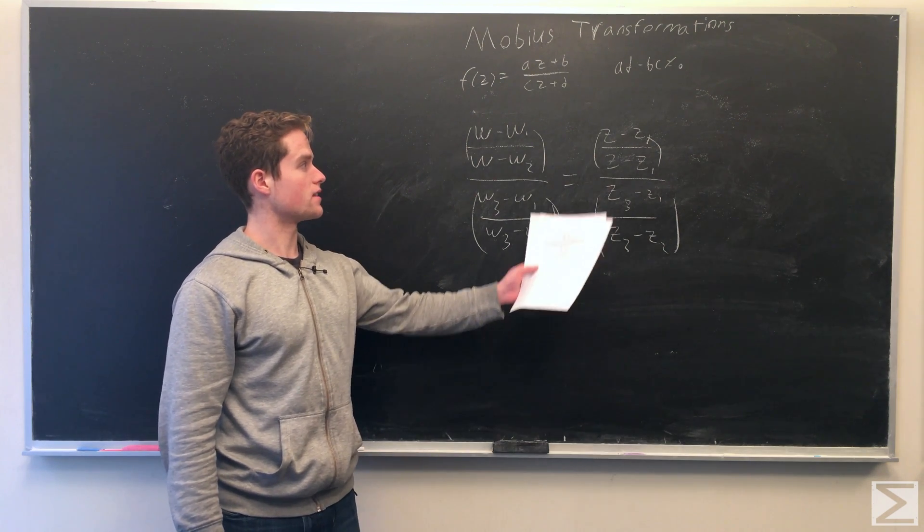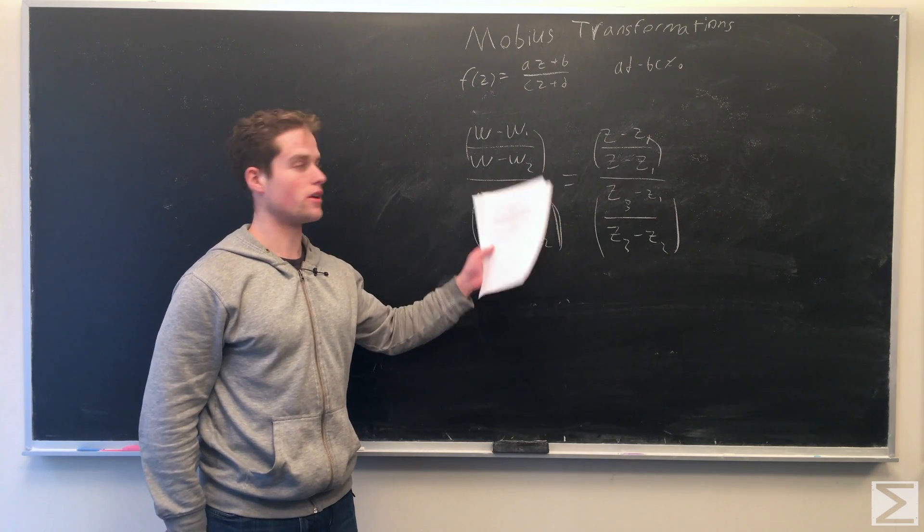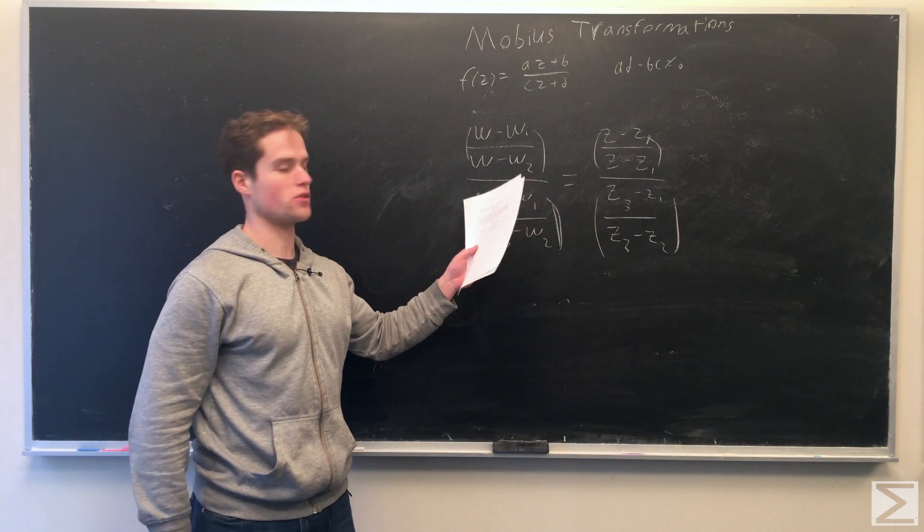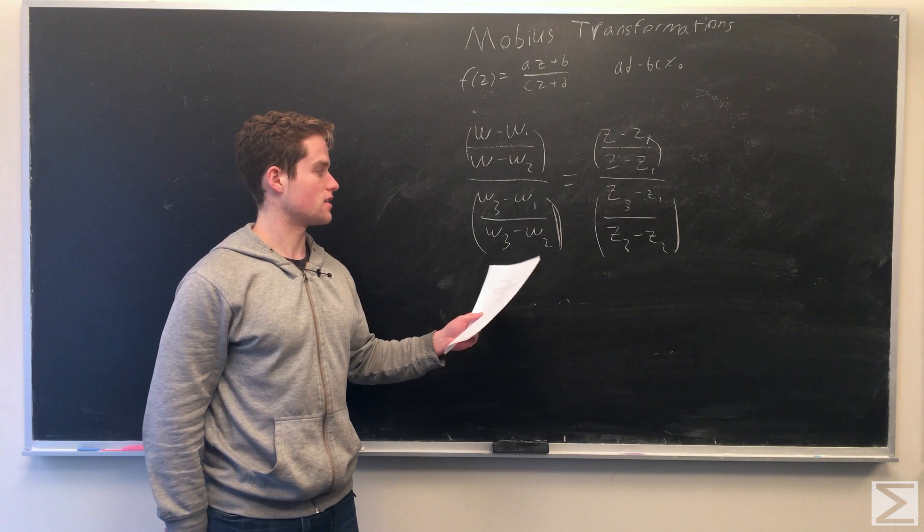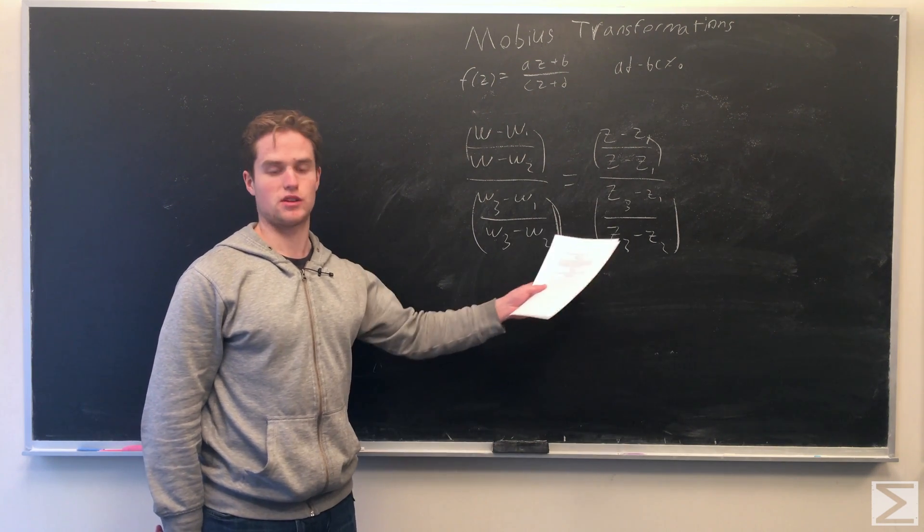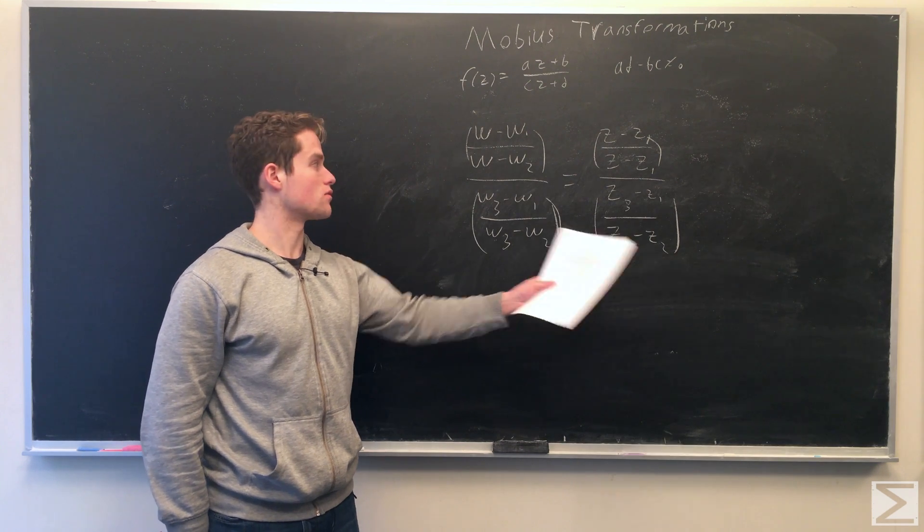So note here that z1 corresponds to w1, z2. We plug in z equals z2 and w equals w2, we get it equals each other. And same for z3, w3. And so this is a transformation that sends three points to three other points.